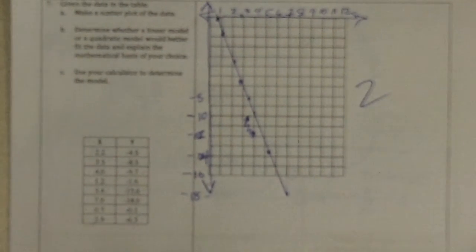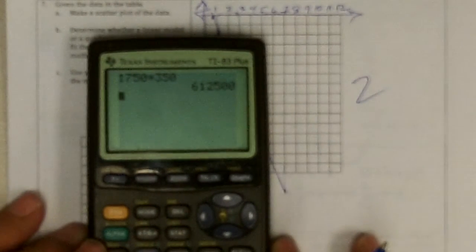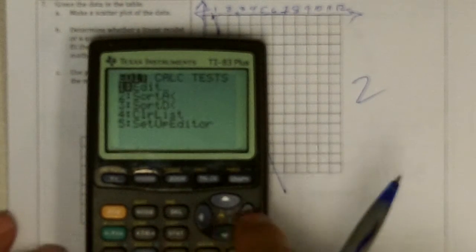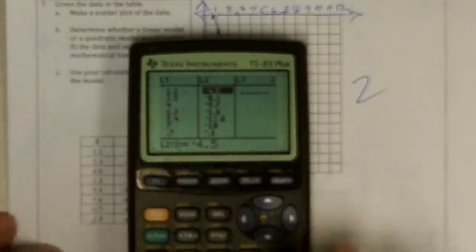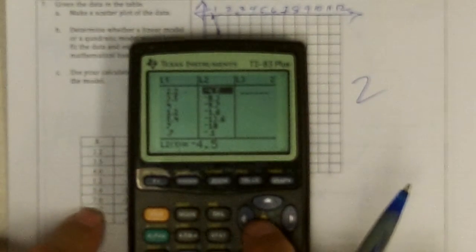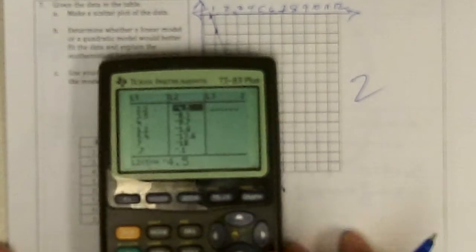Now, let's see. Let's go to our calculator now and determine the model. Should it be the straight line? So, stat, edit, and let's make sure we've got the numbers in here. 2.2, 3.5, got those. Negative 4.5, 8.3, 9.7, okay, got those.